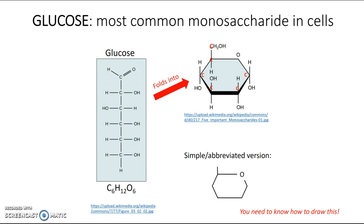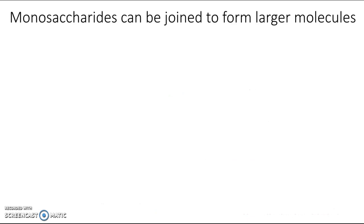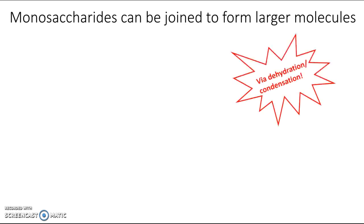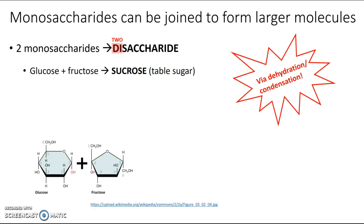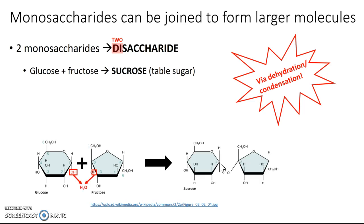Now, what about larger carbohydrates? Carbohydrates do follow that classic monomer-polymer pattern, so we can put together monosaccharides using a dehydration or condensation reaction. If we put together two monosaccharides, we get a disaccharide. For example, putting together glucose and fructose gives us sucrose, or table sugar. A hydroxyl group and a hydrogen are removed to form water, and the two sugars are joined by a new covalent bond known as a glycosidic linkage, which is specific to carbohydrates.